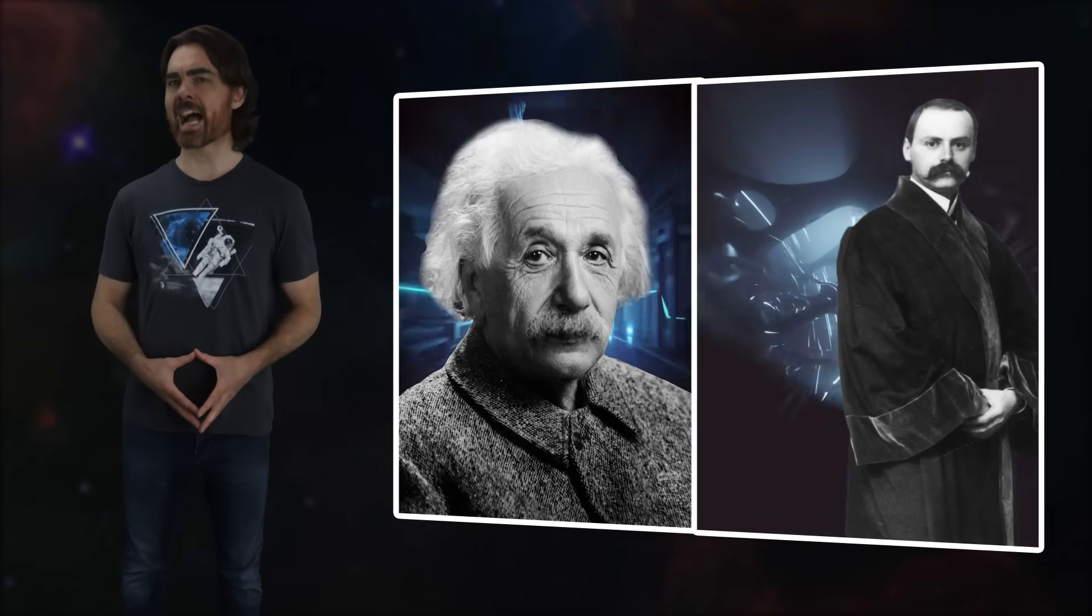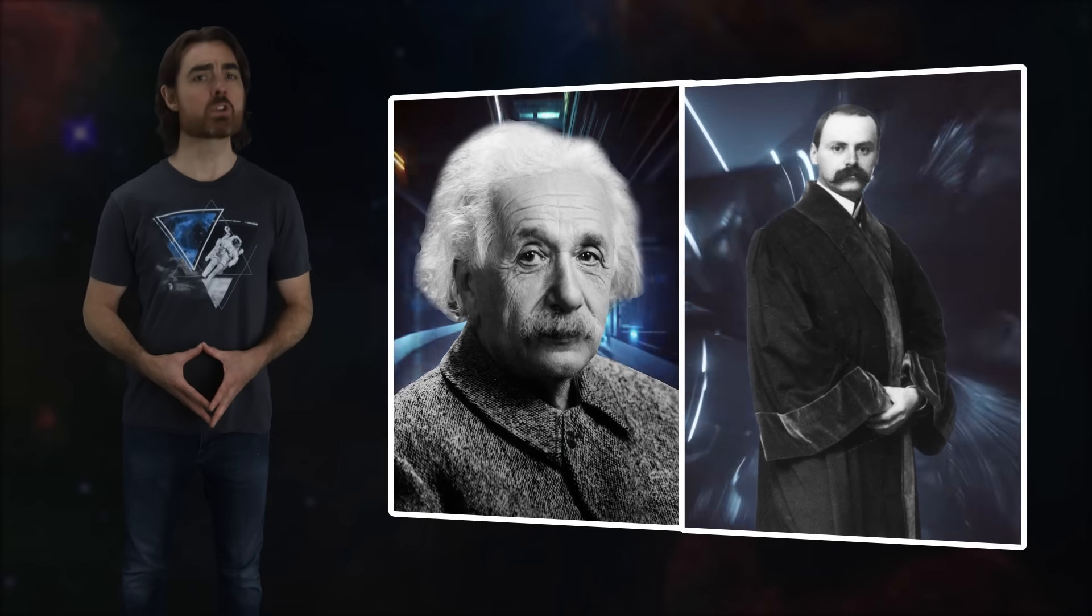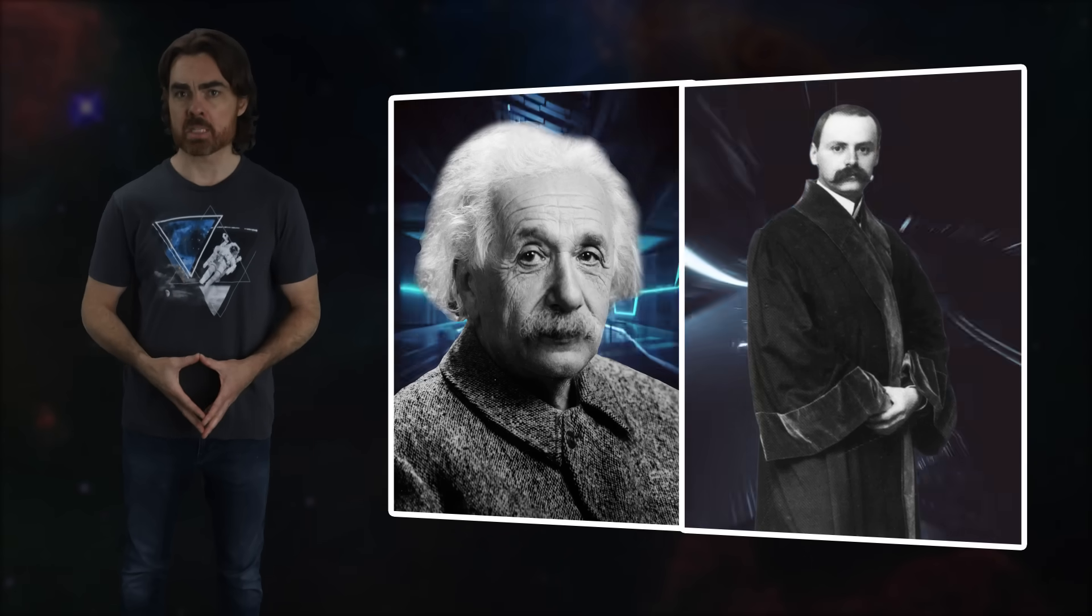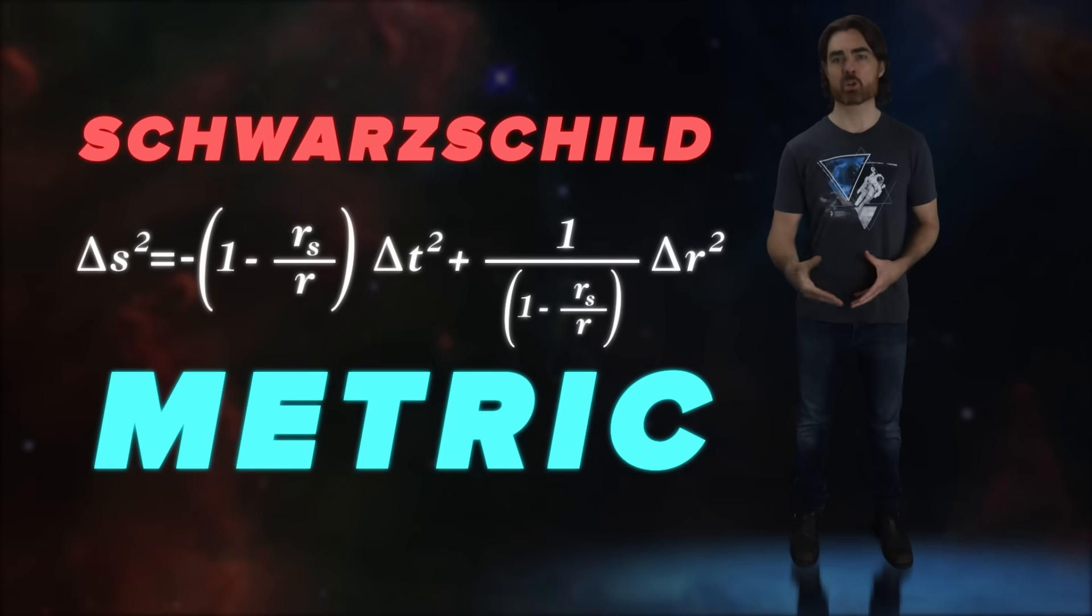Only a few months after Einstein published his general theory of relativity, Carl Schwarzschild solved its equations for a very particular case: a single point of mass in an otherwise empty space-time. The resulting Schwarzschild metric actually describes a black hole, the simplest black hole possible.